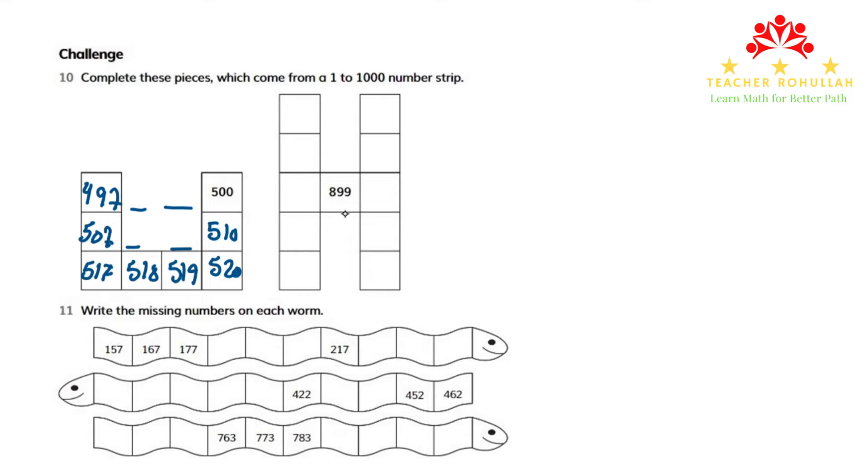In the next piece, we have 899 in the center. To the left of 899, we will have 898. And to the right of 899, we will have 900.